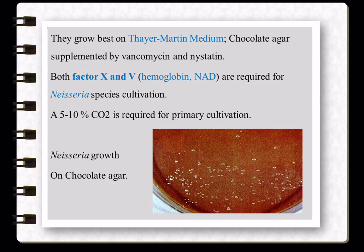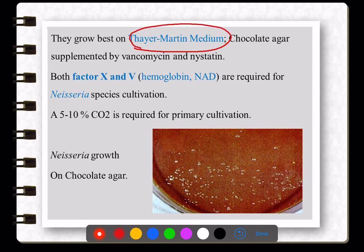Another example of selective media is Thayer-Martin medium, which is chocolate agar with added vancomycin and nystatin (antibacterials). Thayer-Martin medium is used to grow Neisseria.